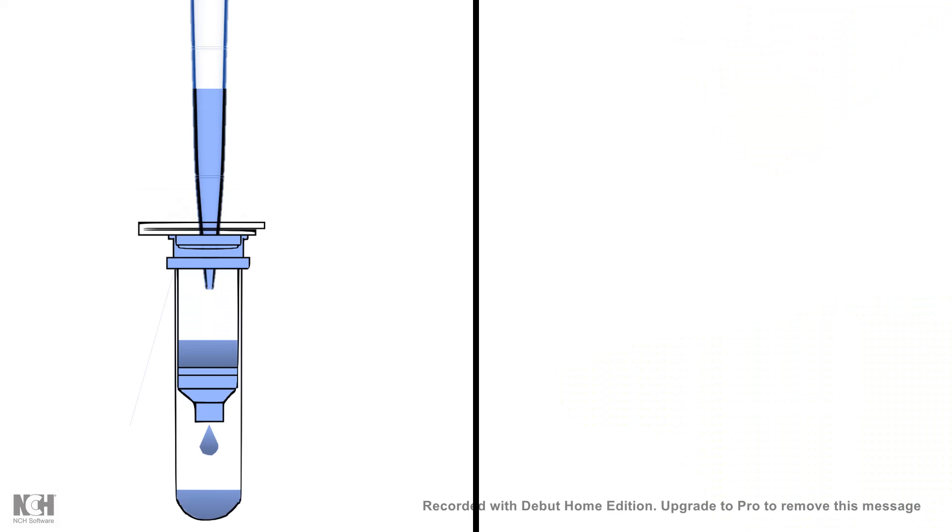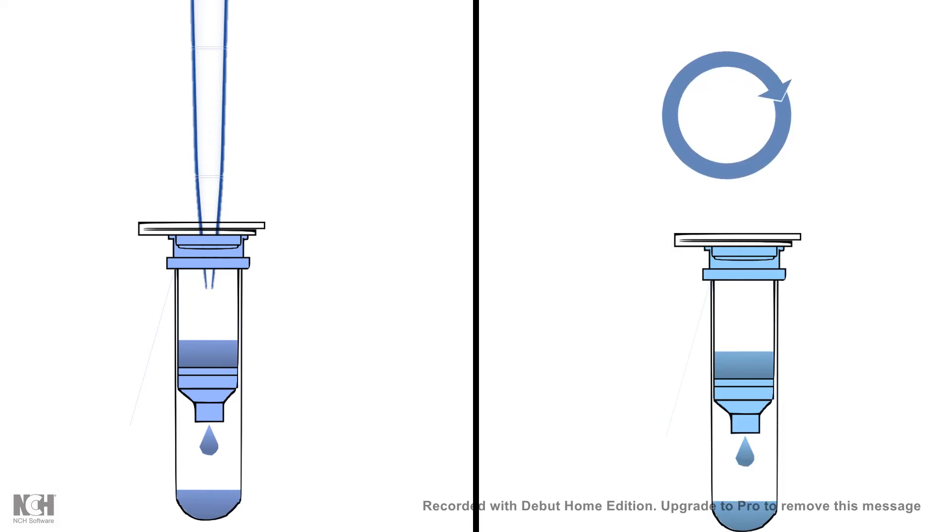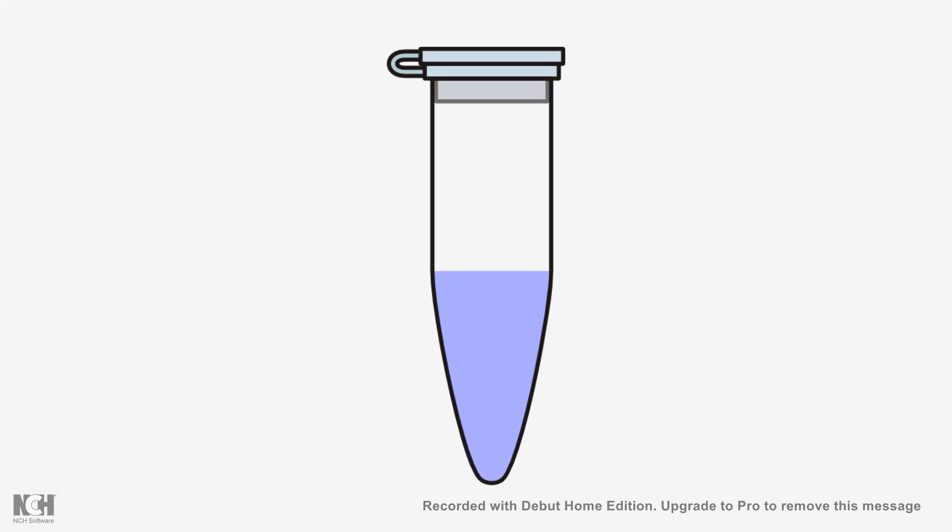After that you wash it with a wash buffer so all the non-specific bindings are washed away. Later on you use an elution step and centrifuge it such that you get the eluent. So the eluent is your purified DNA and this is how you can purify DNA using affinity principles.